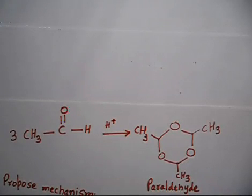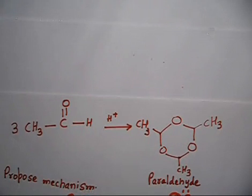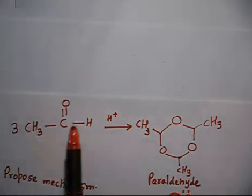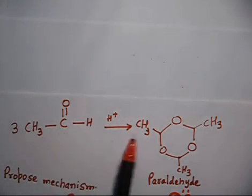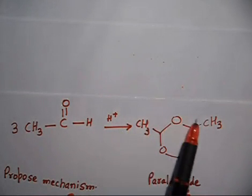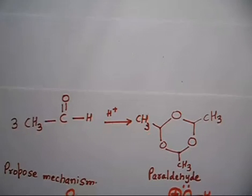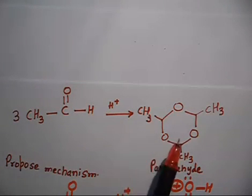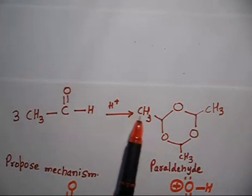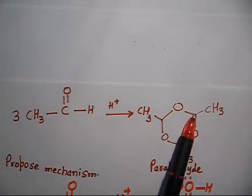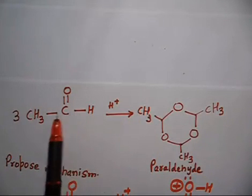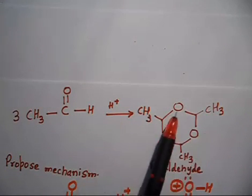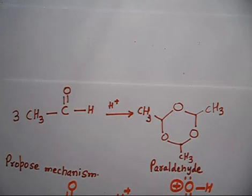Let us discuss this problem. You have three molecules of acetaldehyde — three molecules of CH₃CHO. If you treat this with H⁺, it gives a cyclic compound called paraldehyde. There is a condensation: three molecules condense. The molecule has six carbons (three times two) and you can also count three oxygen atoms on each side.